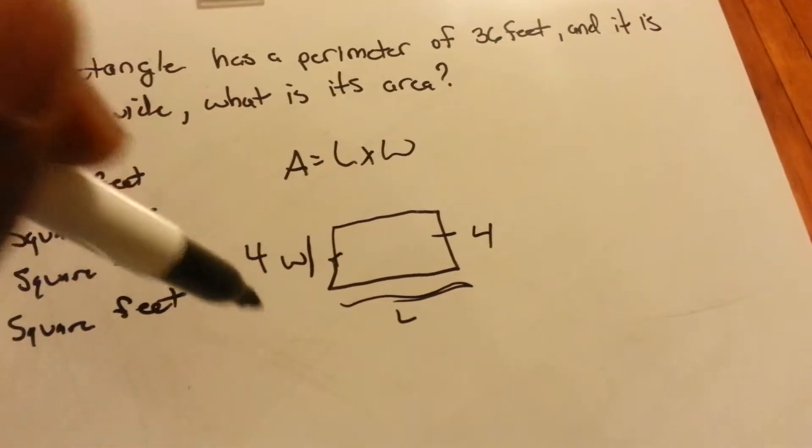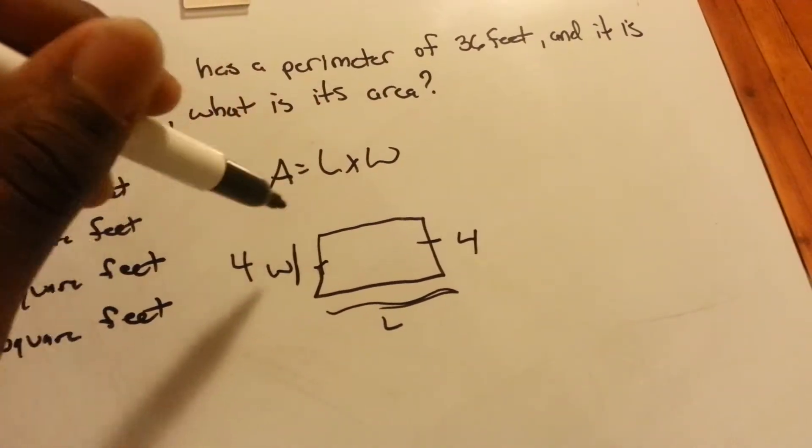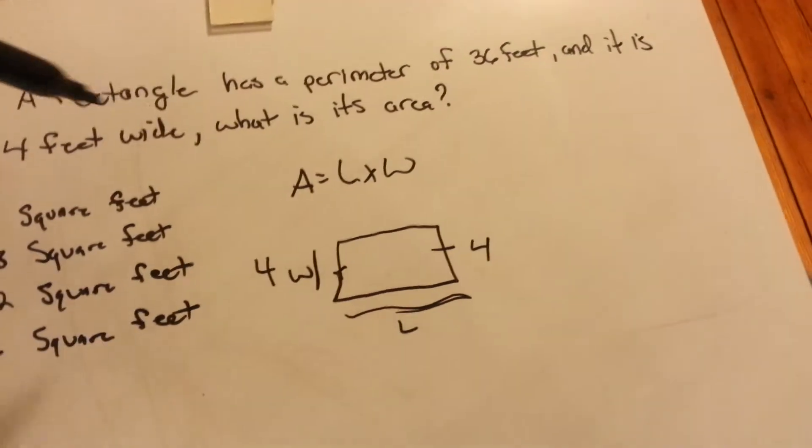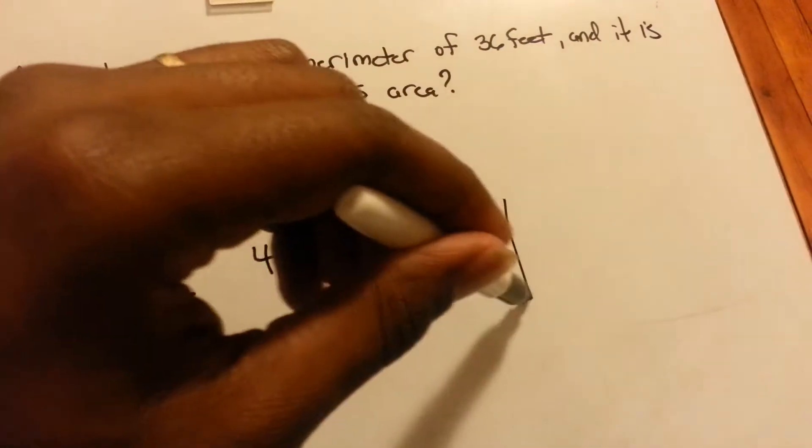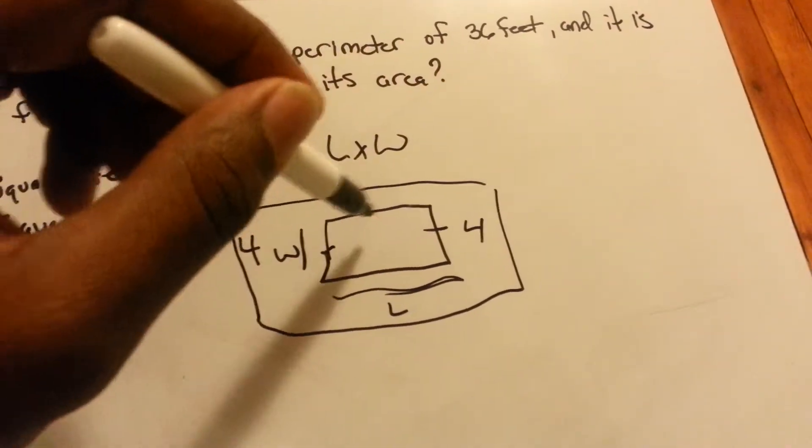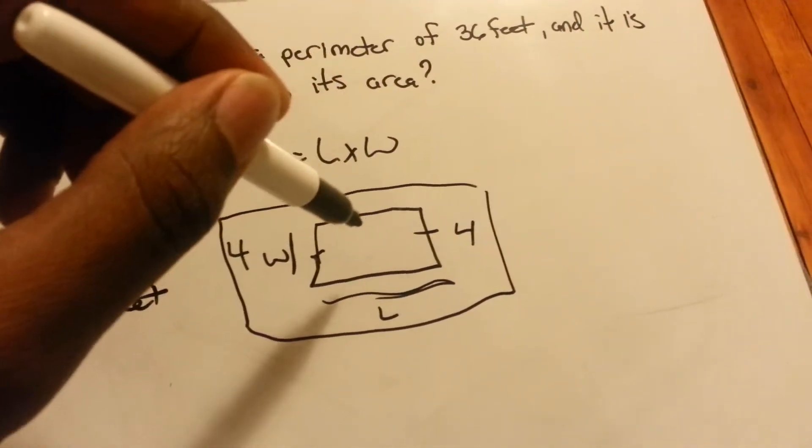So the first thing we need to figure out is how long is the length. So it's telling that the perimeter is 36 feet.